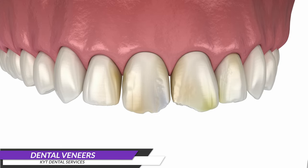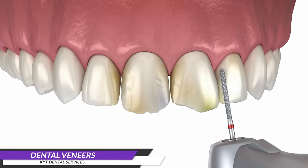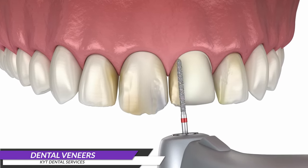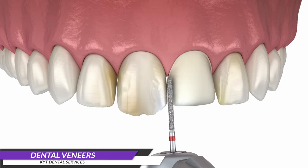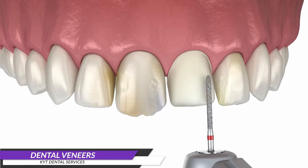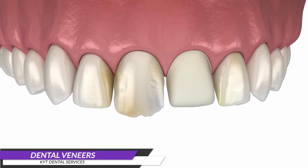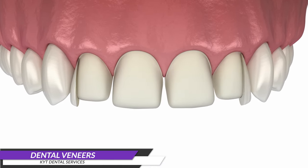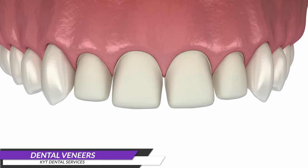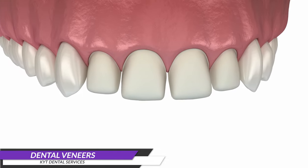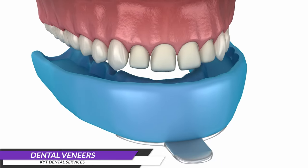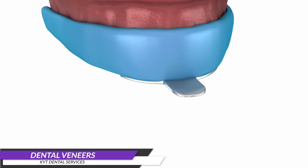Here's the process of a veneer treatment explained. To initiate the veneer treatment, we begin by roughening up the tooth surface and removing any damaged areas. The number of teeth required for the veneer treatment may exceed 4, depending on your specific dental situation.